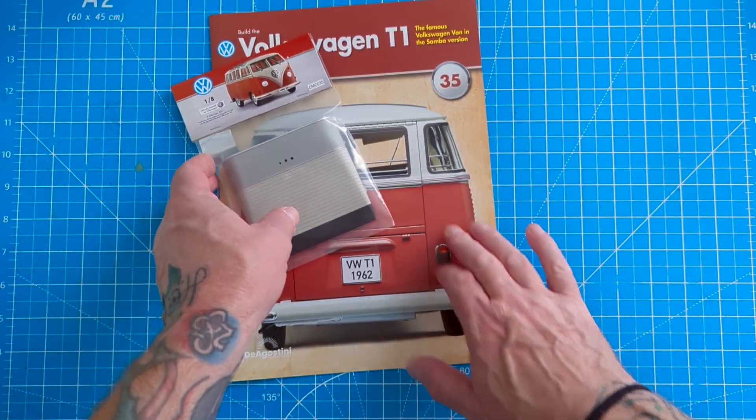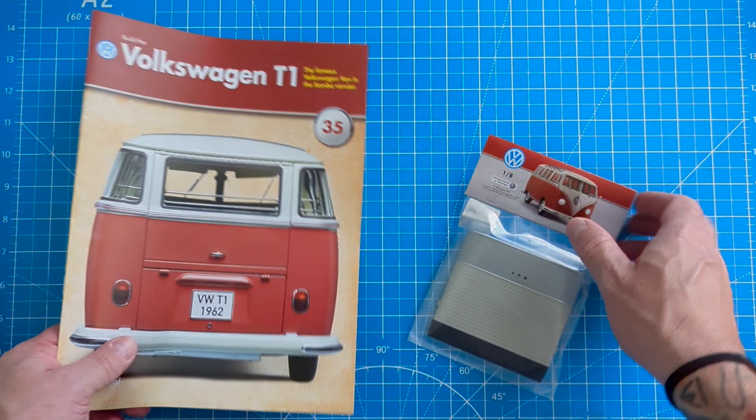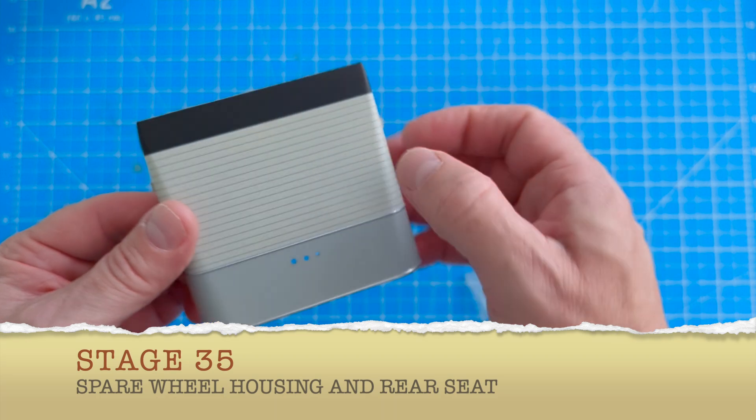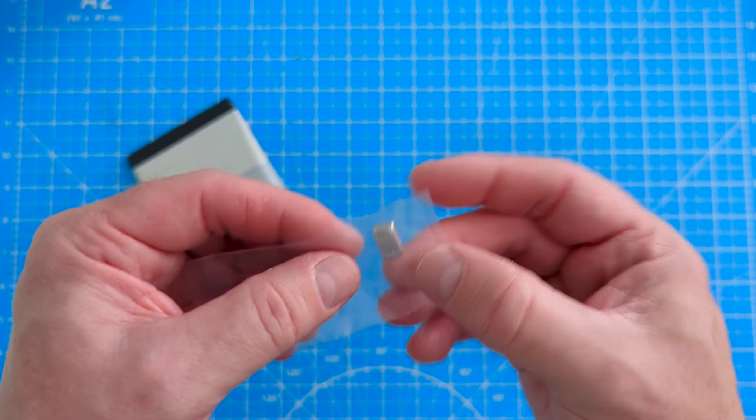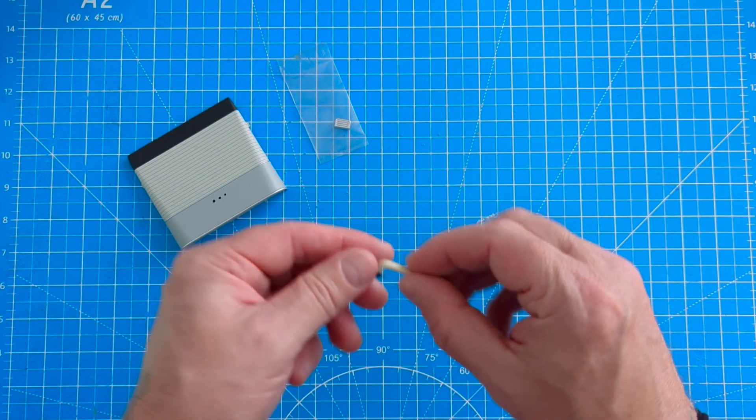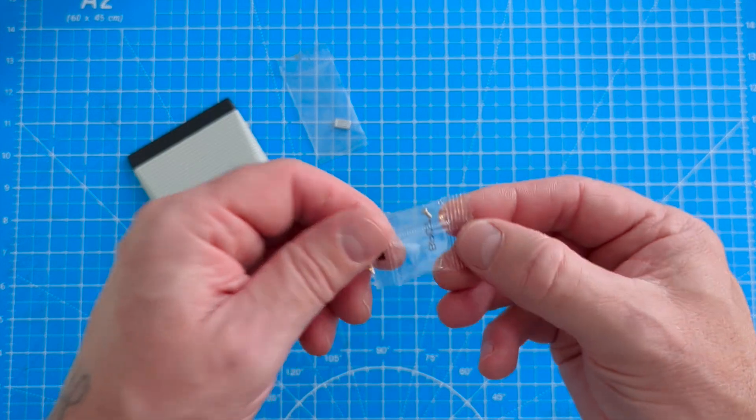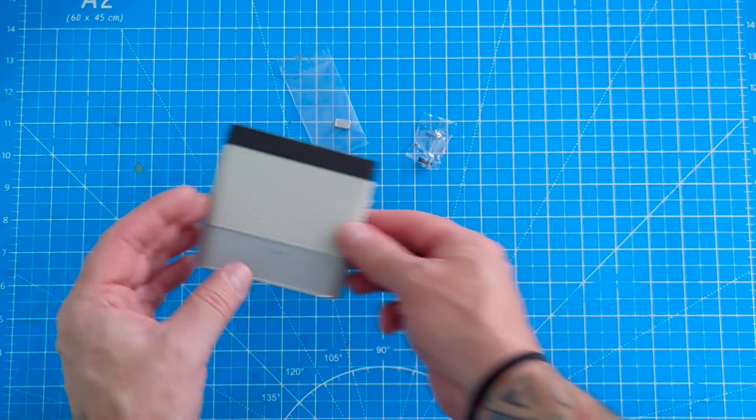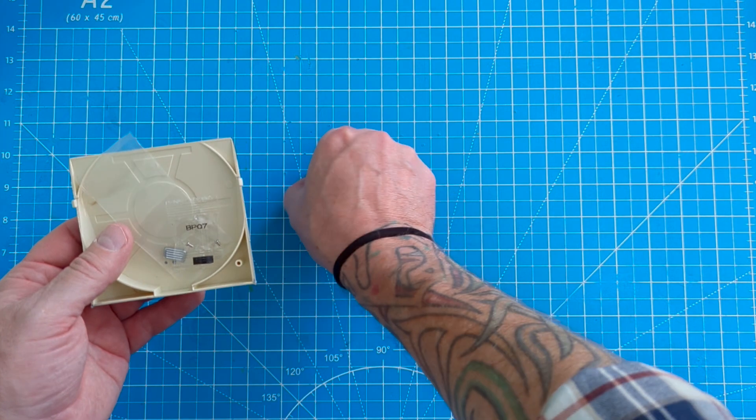Stage 35. Let's see what we need to do. Okay, in stage 35 we've got this piece of plastic covering there. Also got, looks like another little ashtray piece. Got a handle of some description there. We've got some silver screws. These are BP07. Okay, so we've looked at all them parts and that's all we're going to do with them in this stage.